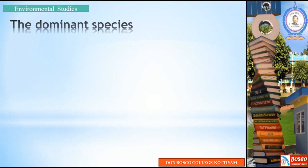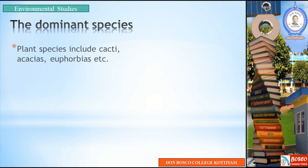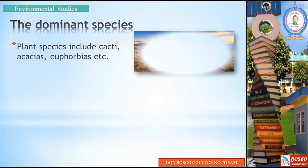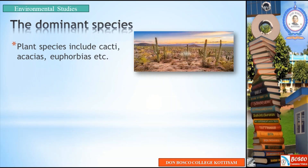The dominant species found in a desert ecosystem — plant species include Cacti, Acacias, Euphorbias, etc. The main plant species image shown is Cacti, Acacias, and Euphorbias.